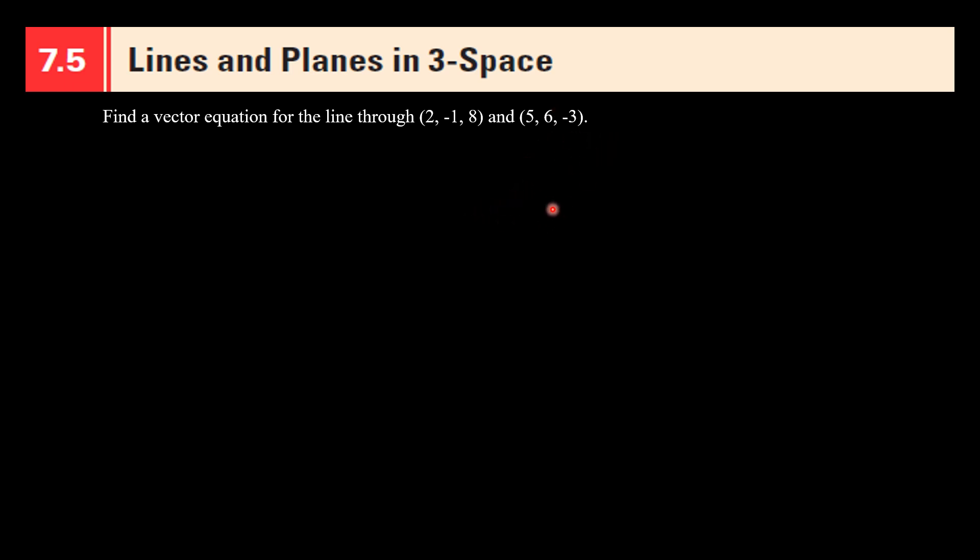Now let's find the vector equation for it. First we'll have to find A. There are two methods to do it. In the first method, to find A, you can do P1 minus P2. This is P1 and this is P2. So here, let's do this. This is P1: (2, -1, 8) minus (5, 6, -3). When you do this, this becomes 2 minus 5, -1 minus 6, and 8 minus 3, which gets A equals to (-3, -7, 11).